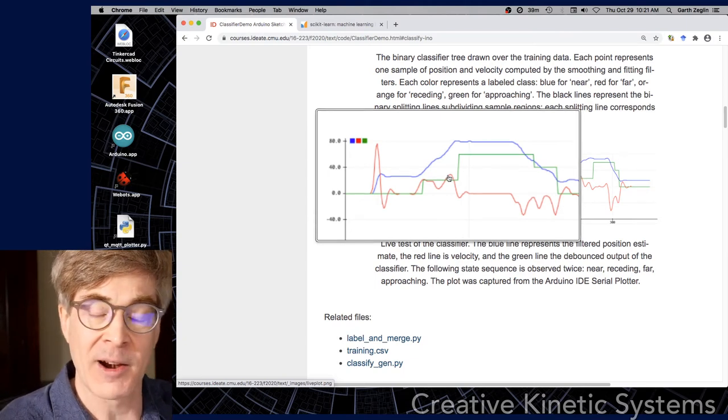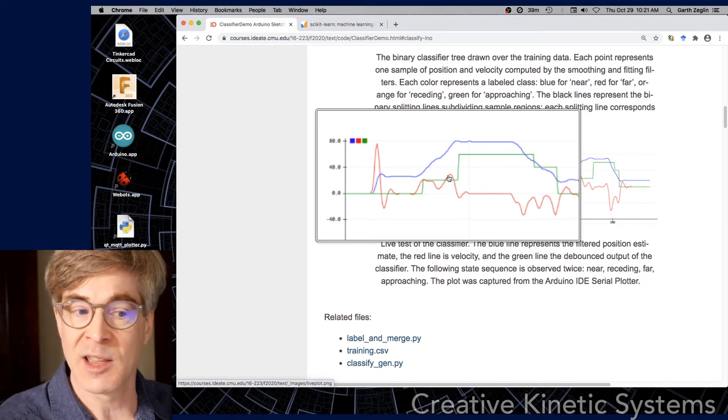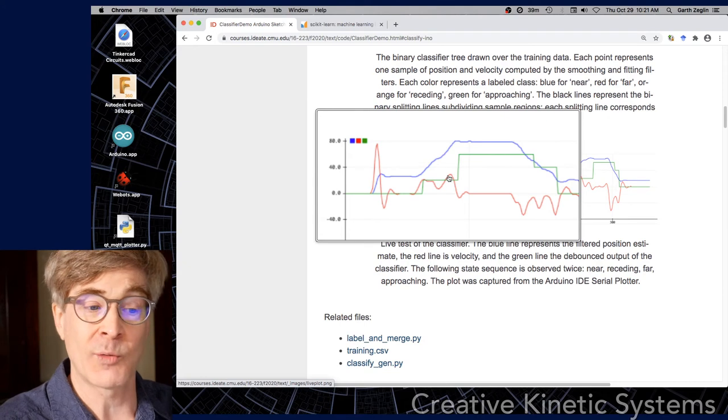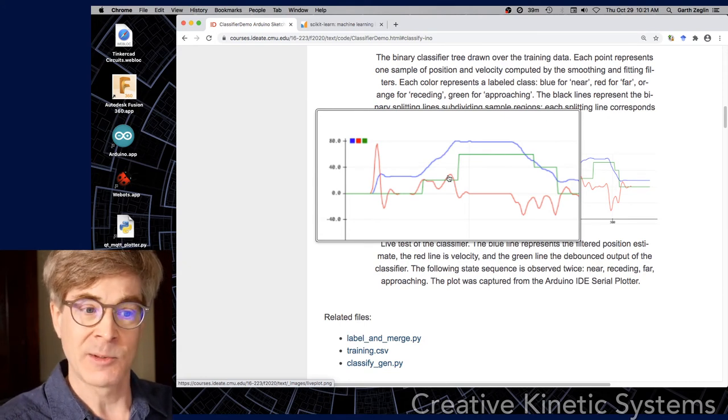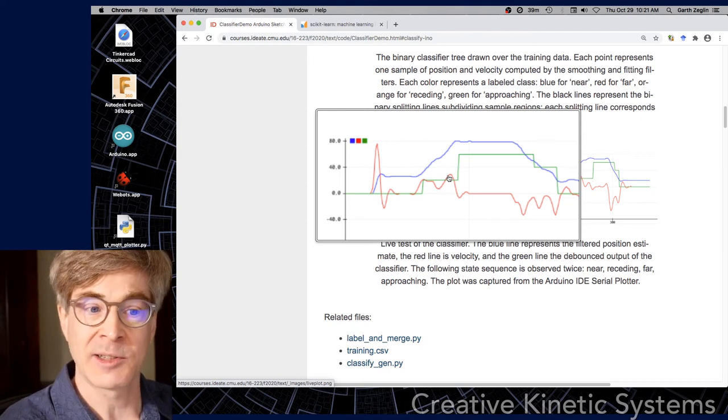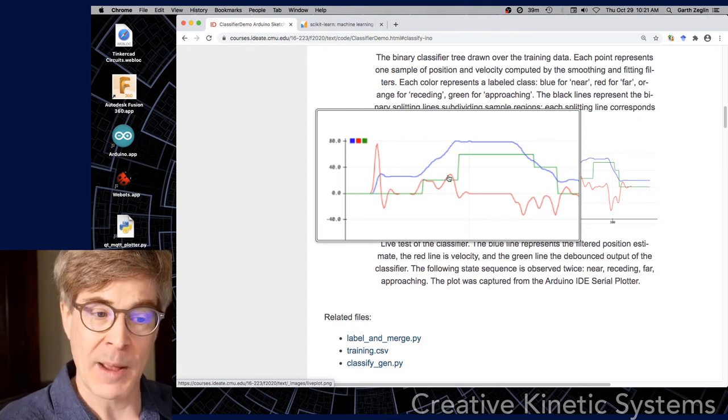And then the green is the output of the classifier, and it's already been debounced here, so any transients have been removed. What we see is a relatively clean set of states where it goes from the near state to the receding state to the far state, holds there for a while, and then to the approaching state and back to the near state as the object moves away and back.